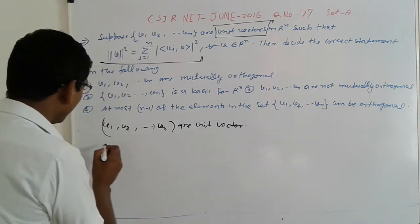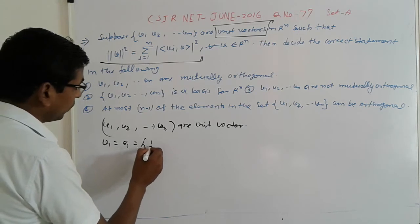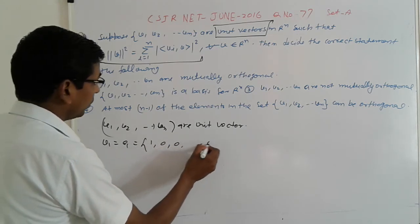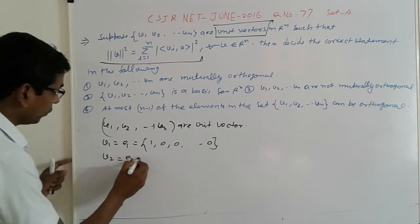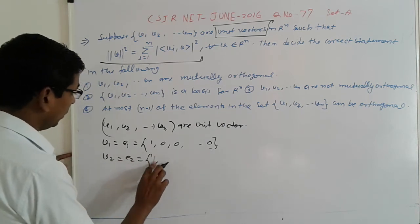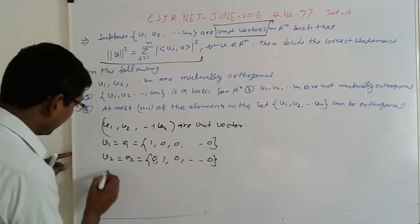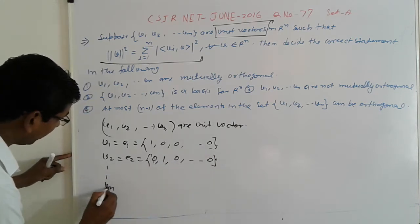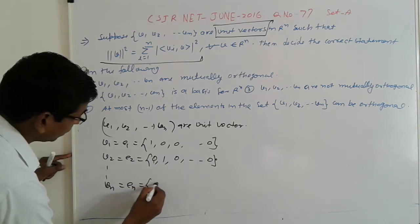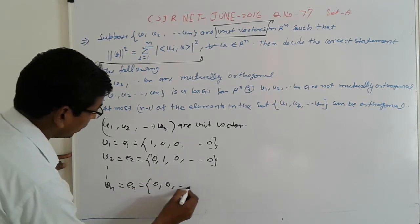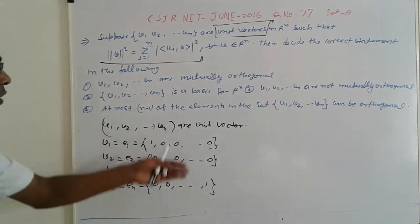Unit vectors — suppose V1 is equal to E1, that is (1, 0, 0, ...) up to n times. V2 is E2, that is (0, 1, 0, 0, ...). Similarly Vn is En, that is (0, 0, ..., 1). So these are unit vectors as well.